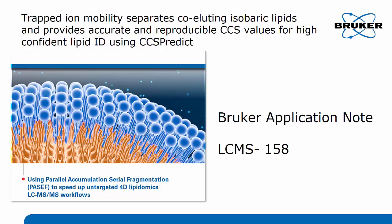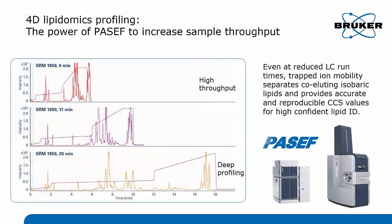Further details can be found in the RUQR application node LC-MS 158, called 'Using Parallel Accumulation Serial Fragmentation to Speed Up Untargeted 4D Lipidomics LC-MS-MS Workflows.' What we investigated in this application node was based on the SRM 1950 lipid extract. SRM 1950 is a commercially available reference plasma from NIST, and we investigated deep profiling versus high throughput approaches.